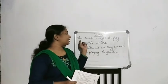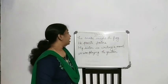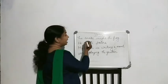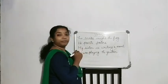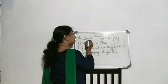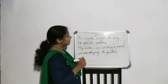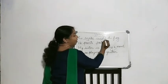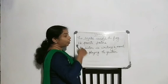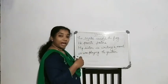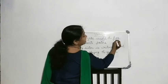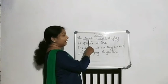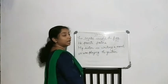In the first sentence, 'The snake caught the frog' — which is the subject here? The snake is performing the action, so snake is the subject. What action is taking place? Caught — so it is the verb. And who receives the action? It is the frog, so it is the object. Snake is the subject, caught is the verb, and frog is the object.